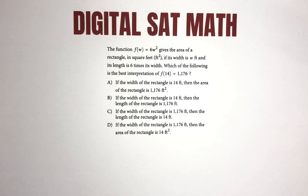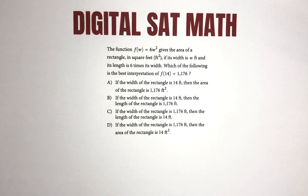Choice C: If the width of the rectangle is 1,176 feet, then the length of the rectangle is 14 feet. Choice D: If the width of the rectangle is 1,176 feet, then the area of the rectangle is 14 feet squared.